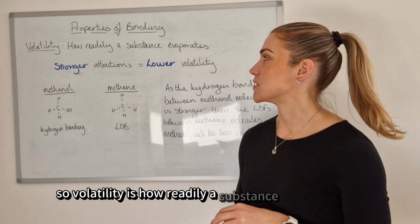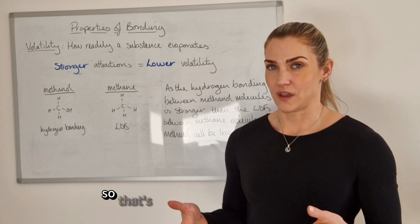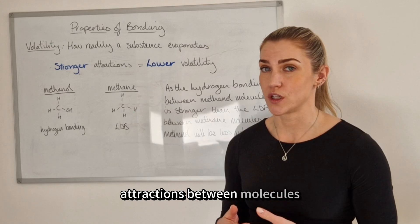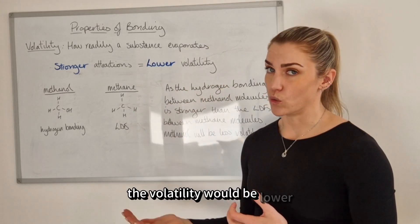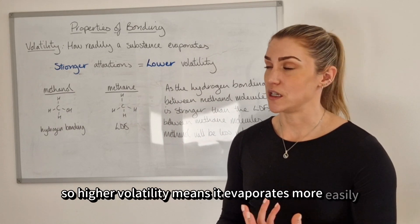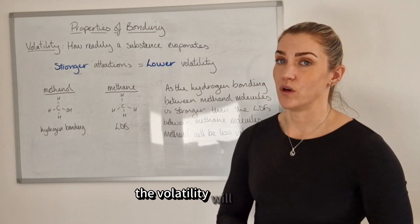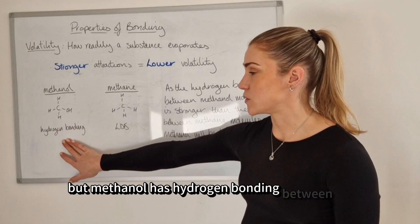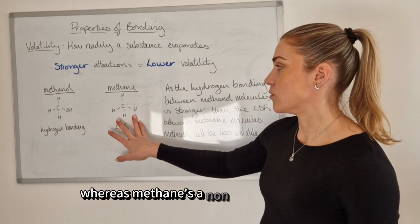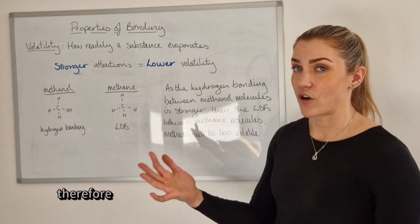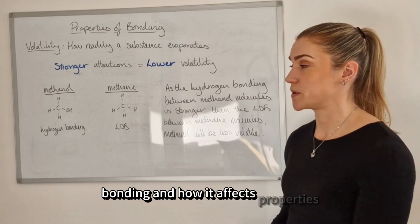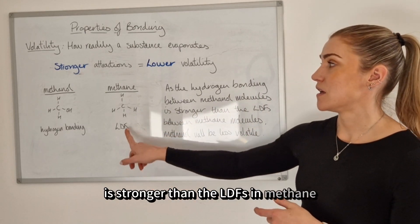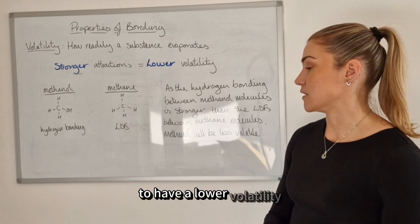Volatility is how readily a substance will evaporate, usually at room temperature — essentially how easily it turns into a gas. If there are stronger attractions between molecules, it won't evaporate as easily, so the volatility would be lower. Comparing methanol and methane: methanol has hydrogen bonding due to its hydroxyl group, whereas methane is a non-polar hydrocarbon with only LDFs. Therefore, because hydrogen bonding in methanol is stronger than the LDFs in methane, methanol has lower volatility and does not evaporate as easily.